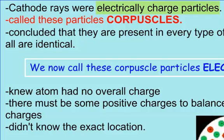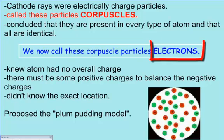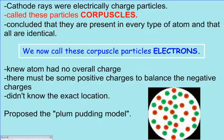The cathode rays were electrically charged. He called these electrically charged particles corpuscles. He concluded that these corpuscles are present in every type of atom, and that they're all identical. We've changed the word corpuscle — we now call it electron. These electrons are negatively charged and were attracted to the positive plate in the cathode ray tube. He knew that the overall atom had no charge, so the positives had to equal the negatives.